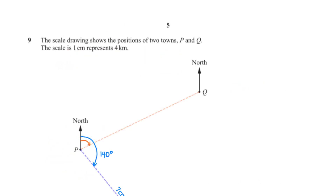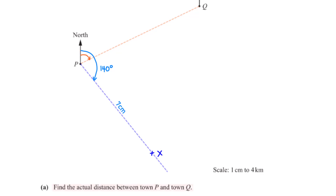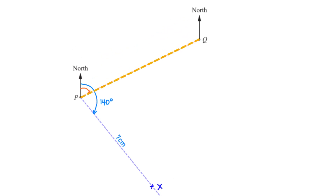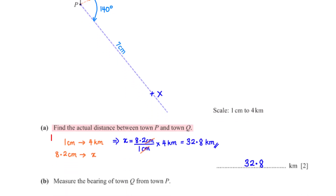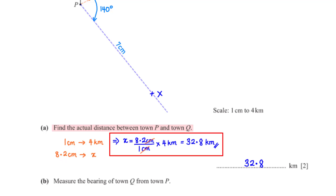The scale drawing shows the positions of two towns, P and Q. The scale is 1 cm represents 4 km. Find the actual distance between town P and town Q. First, we measure the distance between P and Q on the map. This gives us 8.2 cm. So now to get the actual distance, we set up the conversion ratio based on the scale we've been given. When we cross-multiply and make x the subject, we get 32.8 kilometers.